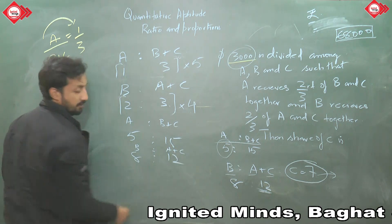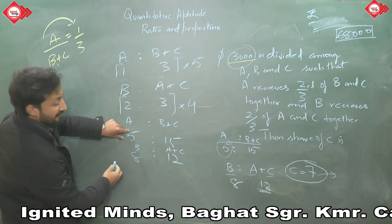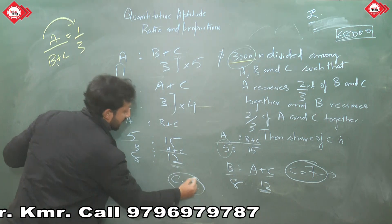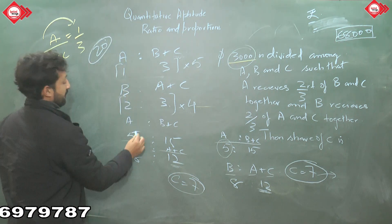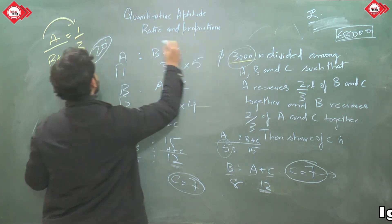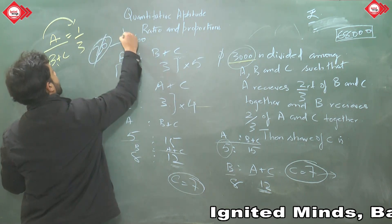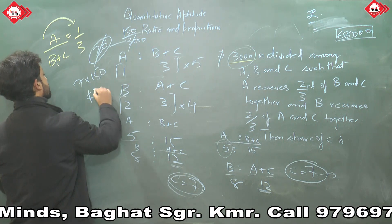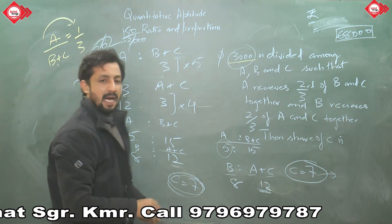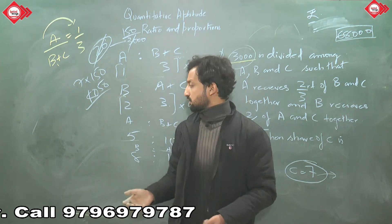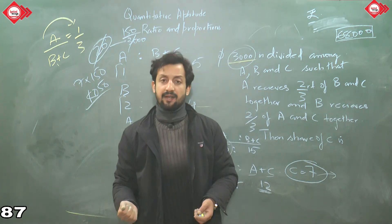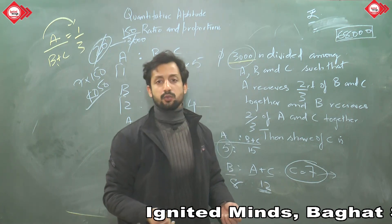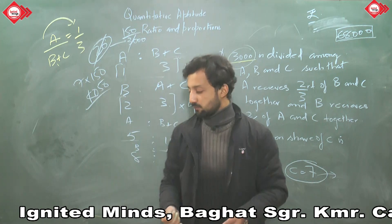A = 5, B+C = 15; B = 8, A+C = 12. A+B+C = 20 parts = 3000, so 1 part = 150. Share of C = 7 parts = 1050. Your calculations should be quick — remember your tables, square roots, and cube roots, as that will really help you.